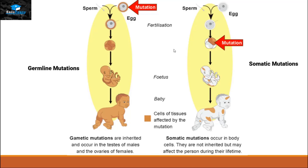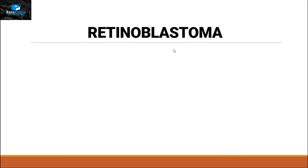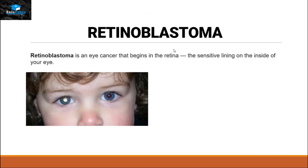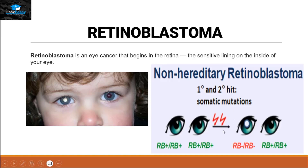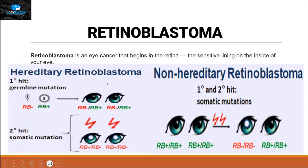Let's take a real-life example of germline and somatic mutation. The example is retinoblastoma — an eye cancer that begins in the retina, the sensitive lining on the inside of your eye. It can be non-hereditary, where the mutation occurs after fertilization, so one child is suffering from the disease but another child is not.